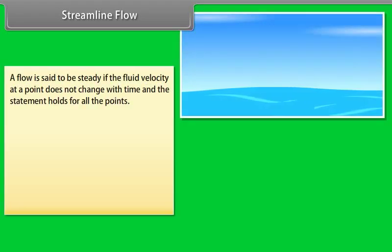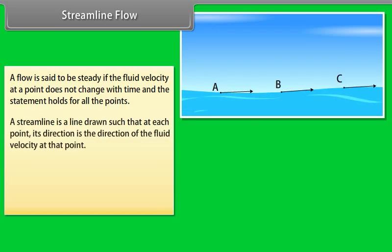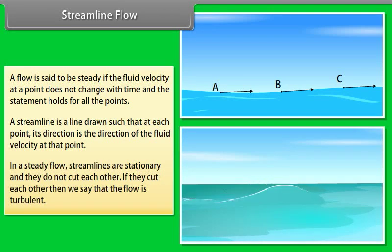Streamline flow. A flow is said to be steady if the fluid velocity at a point does not change with time and the statement holds for all points. A streamline is a line drawn such that at each point its direction is the direction of the fluid velocity at that point. In steady flow, streamlines are stationary and they do not cut each other. If they cut each other, then we say the flow is turbulent.